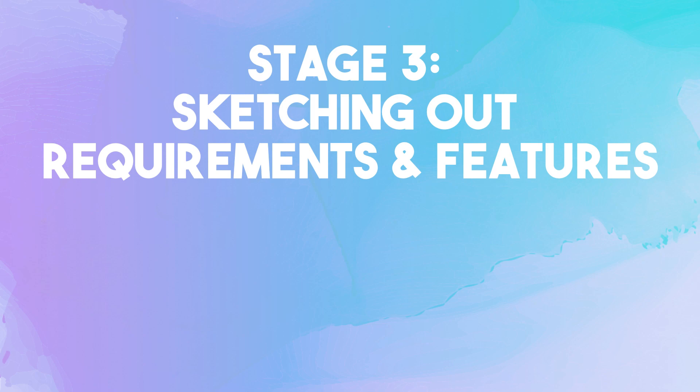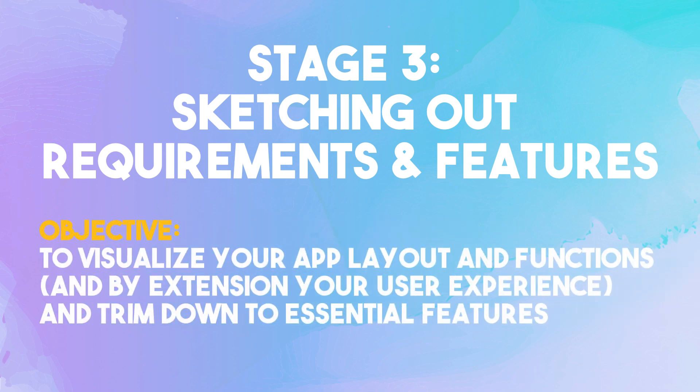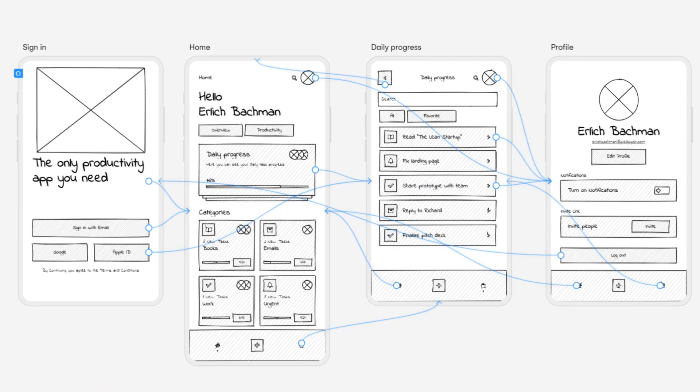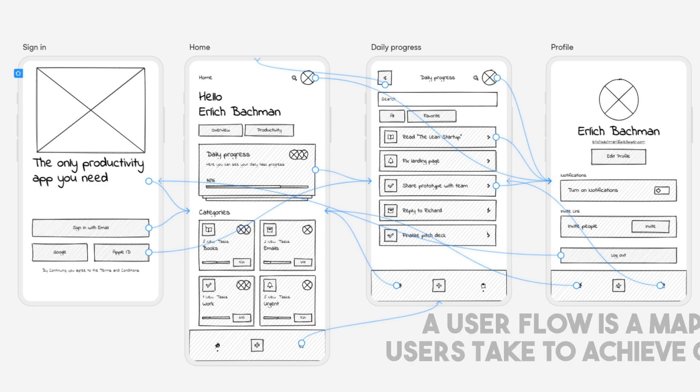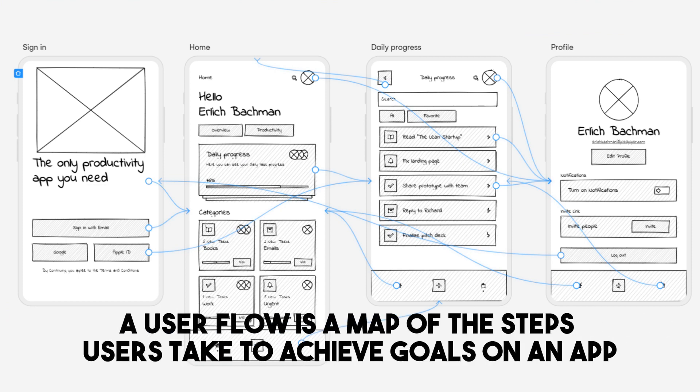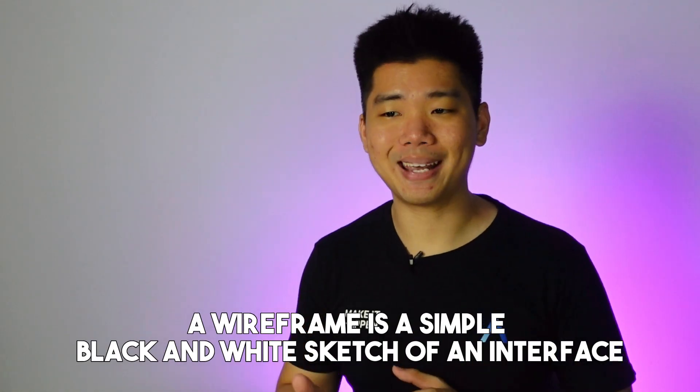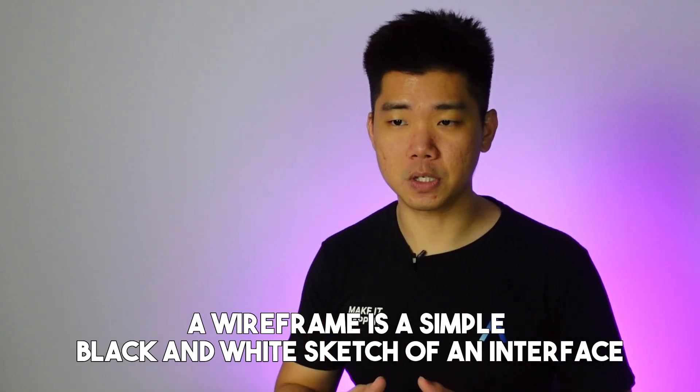You can see why domain expertise and network is a huge help here. Stage three: sketching out requirements and features. Objective: to visualize your app layout and functions, and by extension your user's experience, and trim down to essential features. What you ultimately want to create is a combination of a user flow and a wireframe. A user flow is a map of the steps users take to achieve goals on an app — it helps predict user behavior and obstacles they may encounter. A wireframe is a simple black and white sketch of an interface. Understand the user flow and make sure the interface facilitates it.